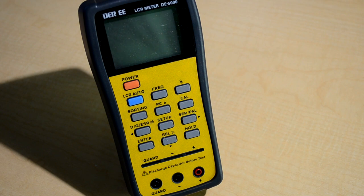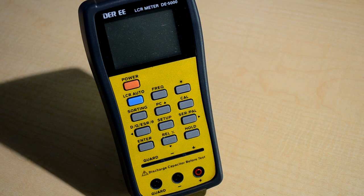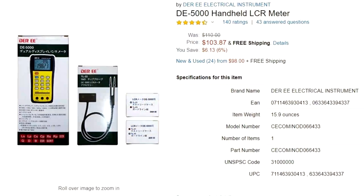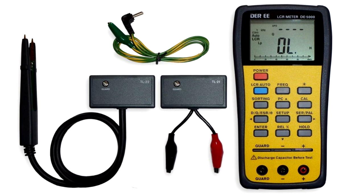All right, so today I wanted to go over a special tool that's this LCR meter, the DEREEDE 5000 model handheld LCR meter. This can be gotten pretty easily off of Amazon for about $104 in U.S. dollars, and the kit will come with a couple of handy attachments.